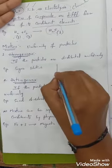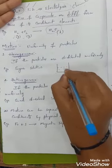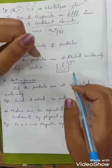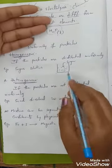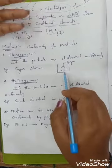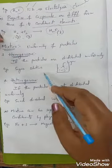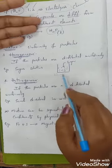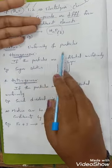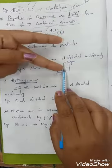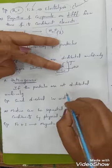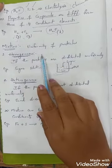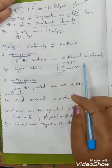An example of a homogeneous mixture is sugar solution. If you add a tablespoon of sugar to a glass of water, the sugar molecules completely dissolve in the water, and you can see only one layer. The sugar particles are uniformly distributed in the water, so it is known as a homogeneous mixture. Solutions are examples of homogeneous mixtures.